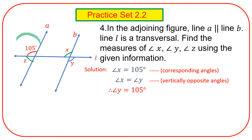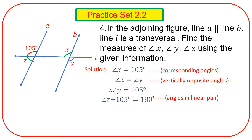Here, angle one hundred and five and angle Z form a linear pair. So, the addition of these two is equal to one hundred and eighty degrees. Reason: angles in a linear pair. Therefore, Z is equal to one hundred and eighty minus one hundred and five, which is equal to seventy-five degrees.